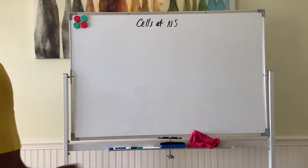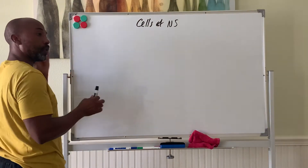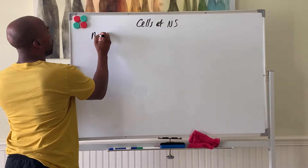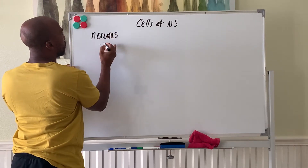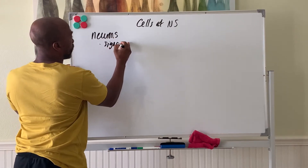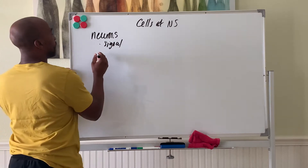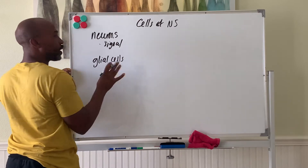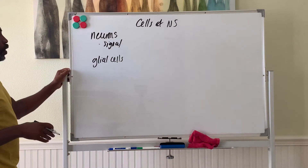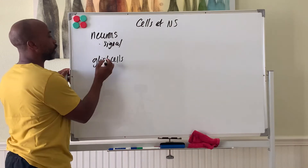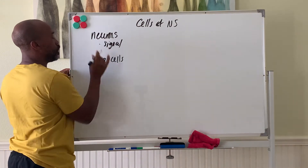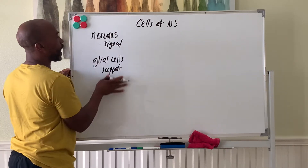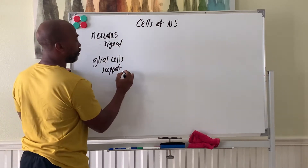Let's look at the cells of the nervous system. The cells you encounter include neurons — the ones that signal, that create thoughts, memory, judgment, and reasoning — and your glial cells. Glial cells are called supporting cells, but they do quite a lot; you can't live without them. Glial cells far outnumber the neurons by about 50 to 1.